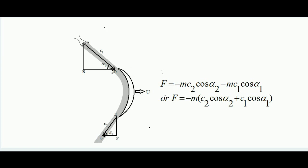The initial momentum of steam in the horizontal direction at the blade inlet is +m·c1·cos(α1). The force developed over the blade equals the final momentum minus the initial momentum: F = −m·c2·cos(α2) − m·c1·cos(α1). Taking m common, the expression inside the bracket is c2·cos(α2) + c1·cos(α1), with −m outside. If we are only concerned with the magnitude, we can remove the negative sign.